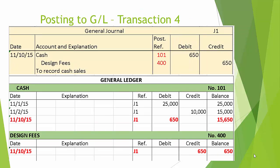Transaction number four: the debit to cash of 650 is posted to the cash general ledger account number 101. Looking at that page, you see the entry on November 10th, cross-reference J1, a debit posting of 650, and a new ending cash balance of 15,650. The credit to design fee is posted to general ledger account 400. Looking at the general ledger page, we see the date November 10th, reference J1, a posting of 650 under the credit column, and 650 under the balance column. Since this is a revenue account, this balance is 650 credit.